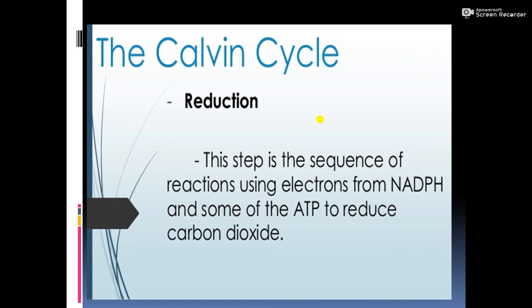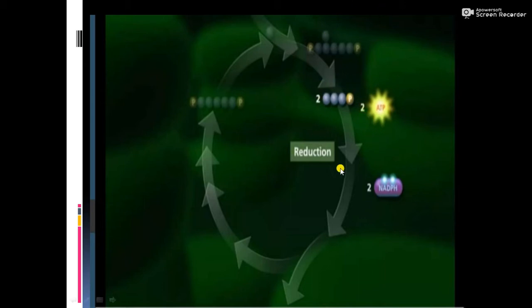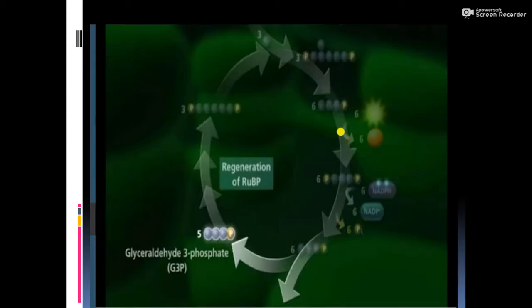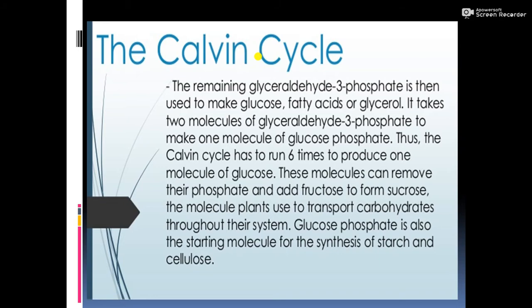The reduction step is a sequence of reactions using electrons from NADPH and some ATP to reduce carbon dioxide. Then comes regeneration: in the final step, ribulose-1,5-bisphosphate is regenerated. For every three turns of the cycle, five molecules of glyceraldehyde-3-phosphate are used to reform three molecules of ribulose-1,5-bisphosphate. The remaining glyceraldehyde-3-phosphate is then used to make glucose, fatty acids, or glycerol.